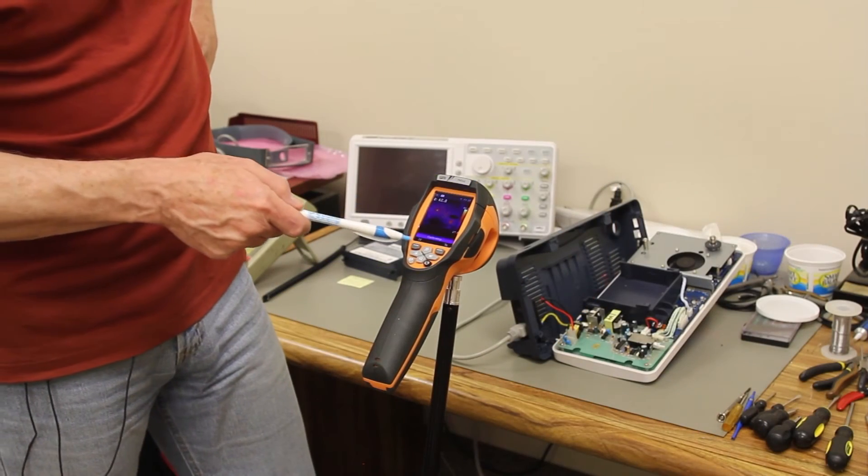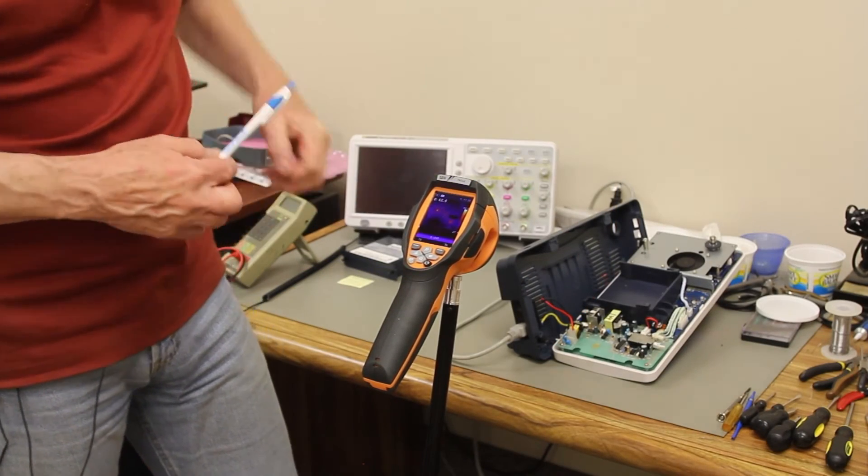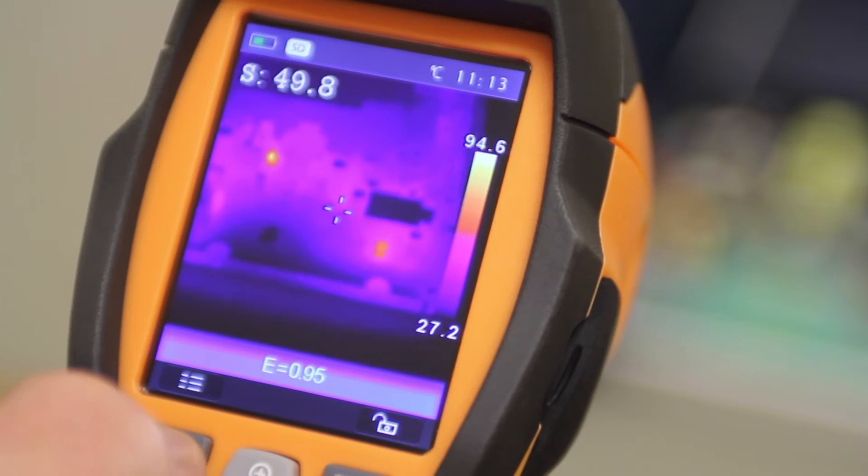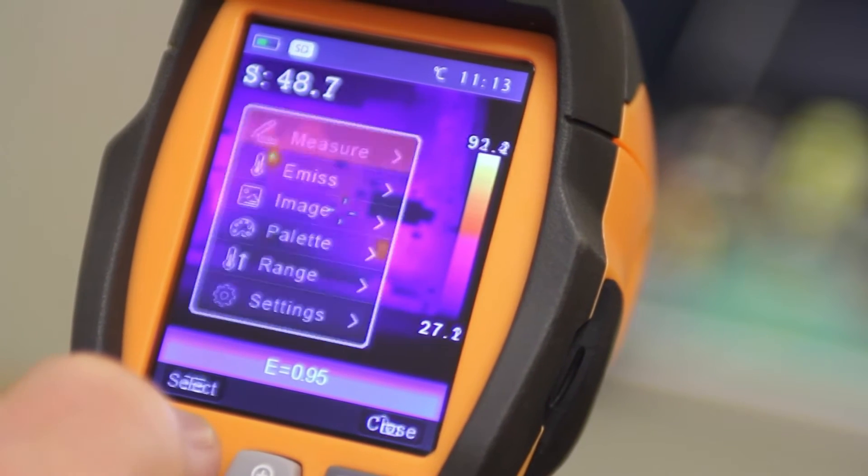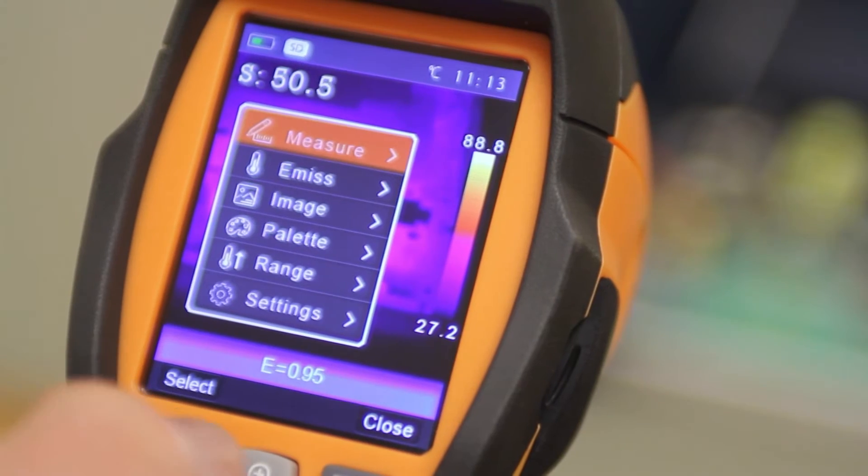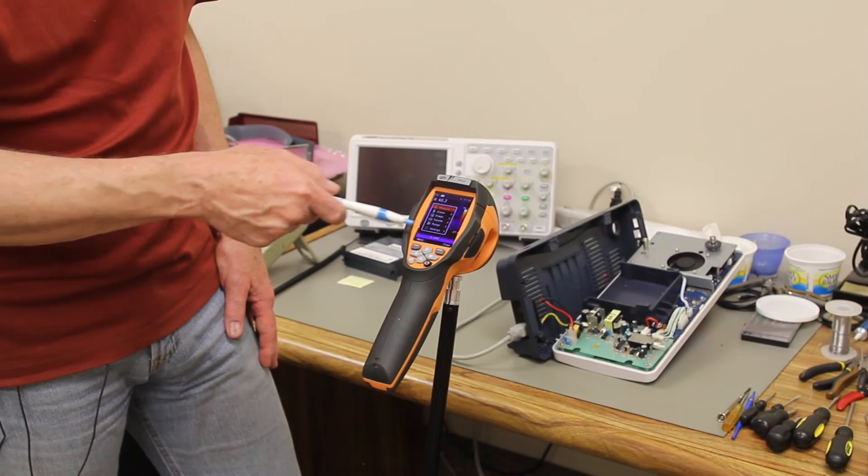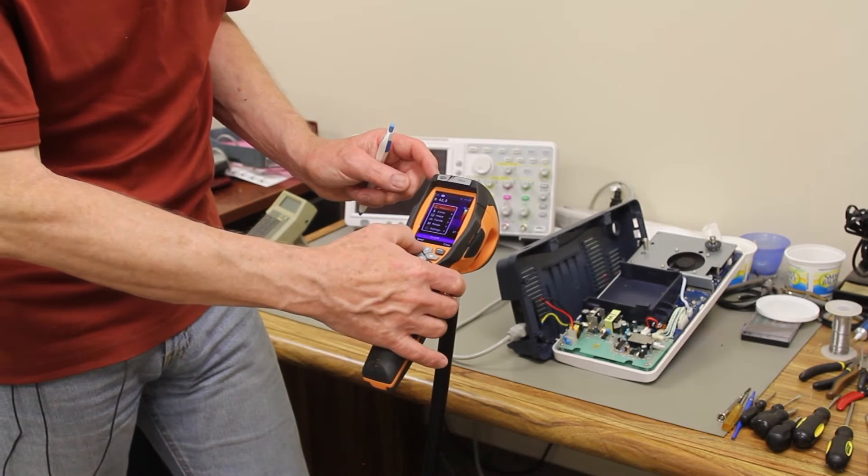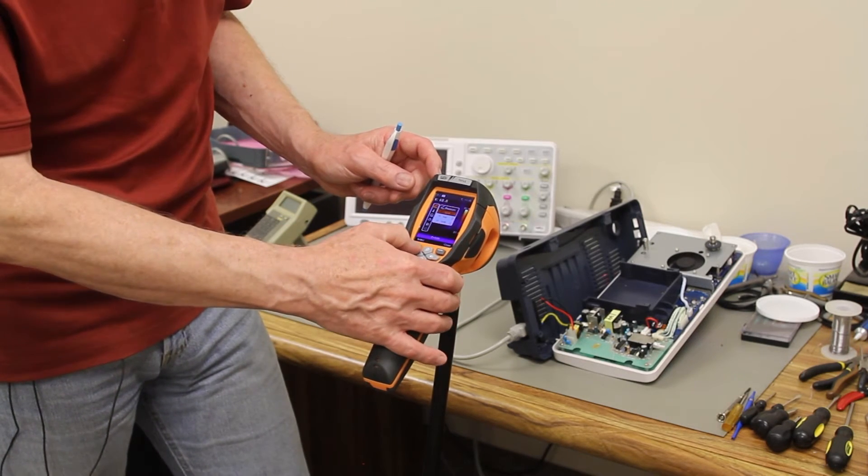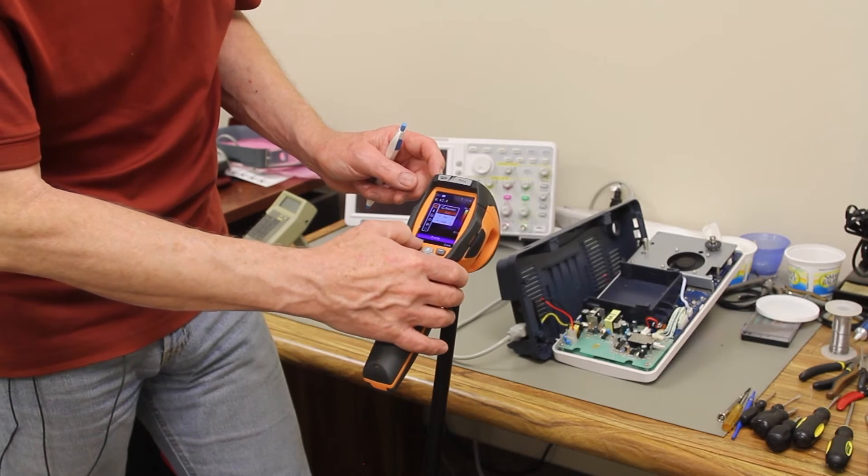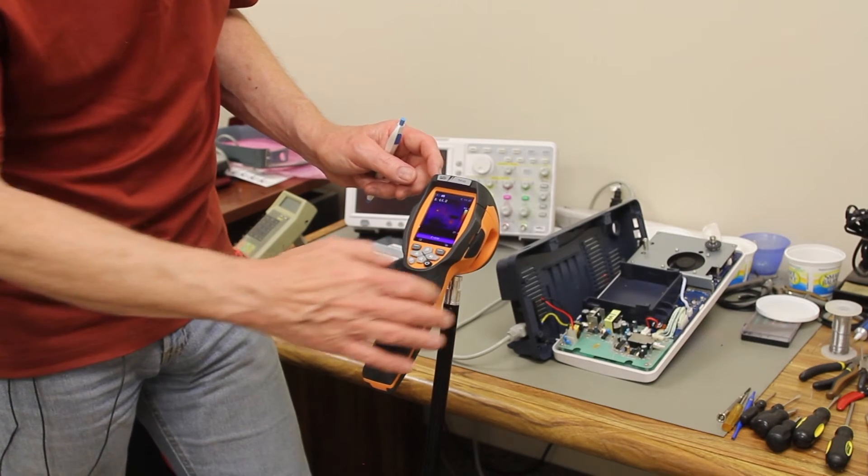So this button here is for bringing up the utility menu right there. You just hold that and then you get a number of other choices here and you can configure the unit how you want it. Okay, the other button over here, let me see if I can get out of here. Okay, close. Alright.